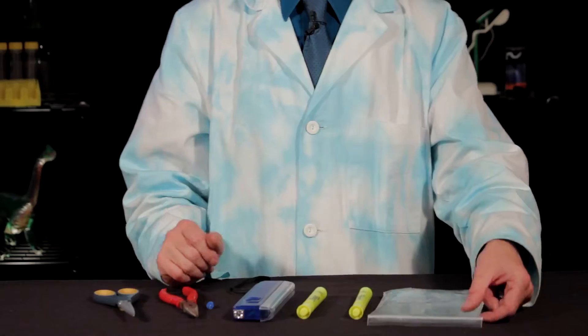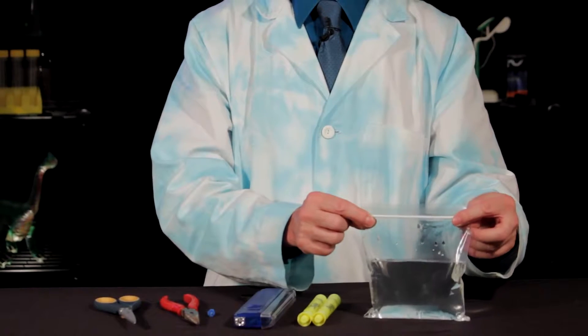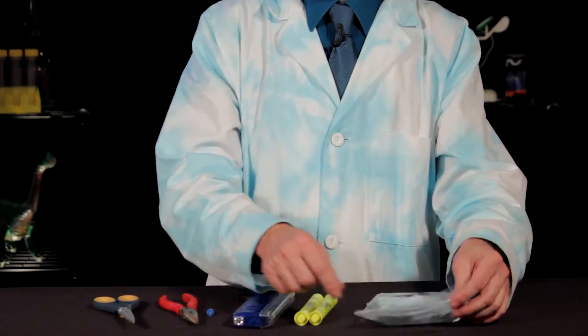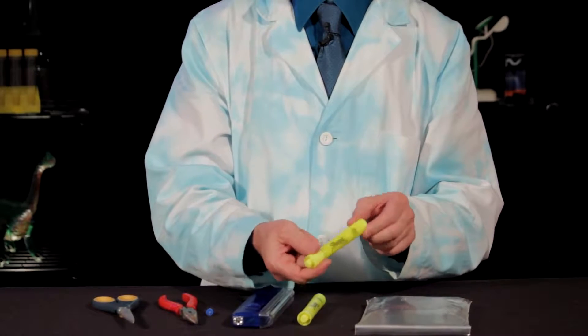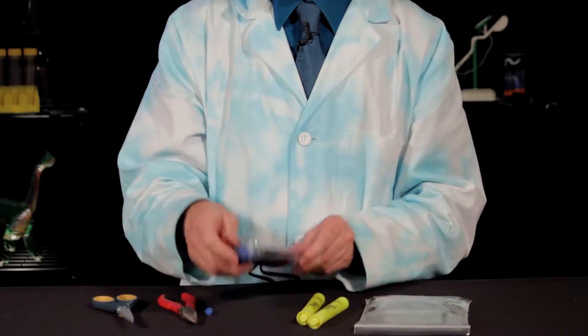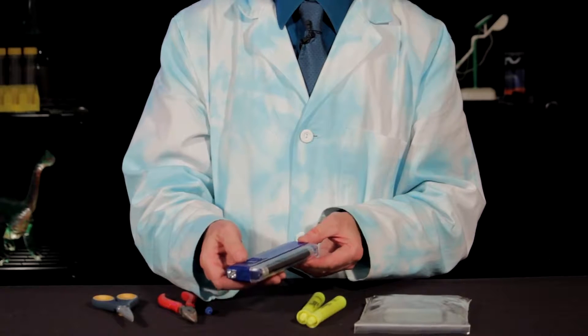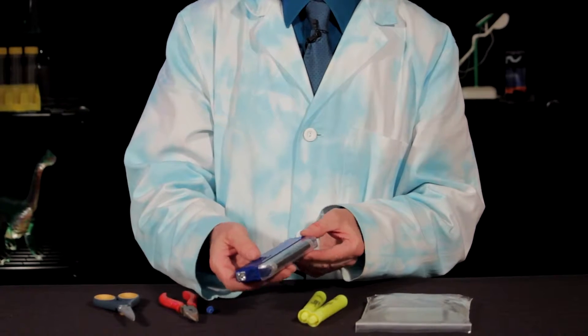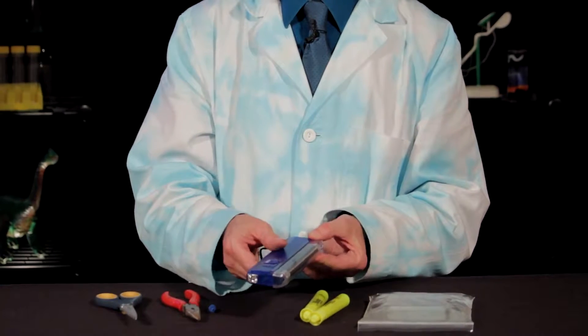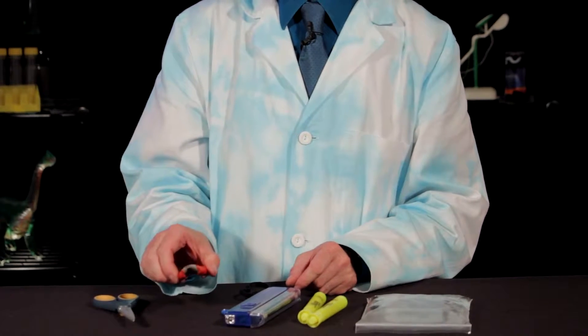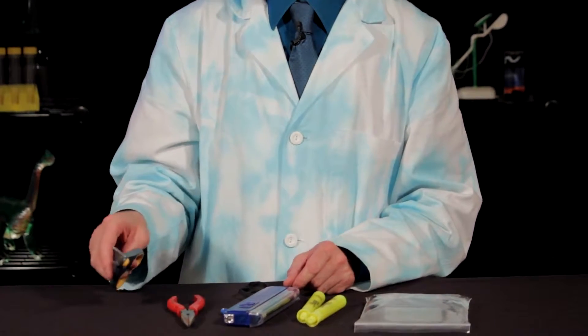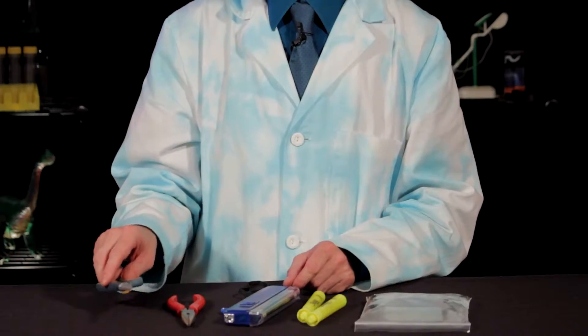All right, so here's what you're going to need. A small zip bag about halfway filled with water, some highlighter markers, nice and fresh, and make sure that they're nice and fluorescent. Then, a battery-powered fluorescent flashlight, which you can find at a hardware store or even some party stores. A small push pin, a pair of needle-nose pliers, and some scissors. All right, let's get started.